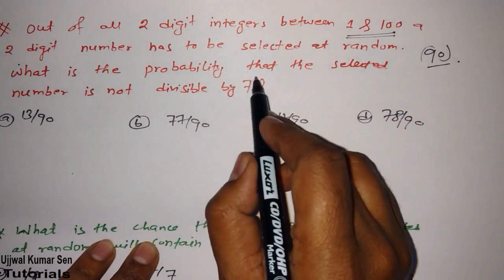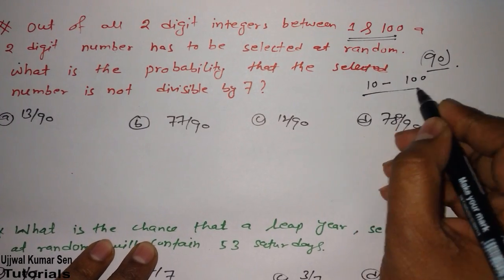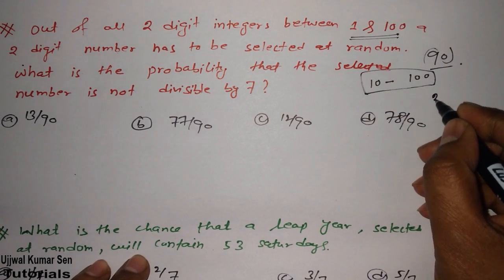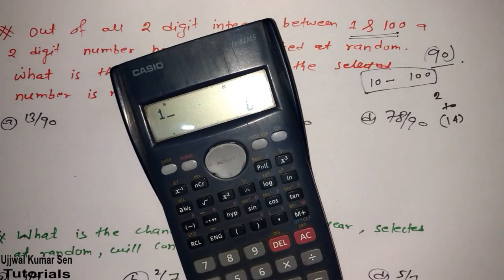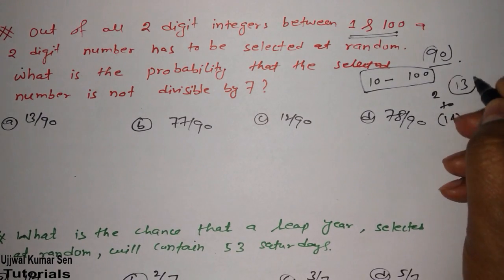Now what is the probability that the selected number is not divisible by 7? Is not divisible by 7. So I have to find out first, how many numbers are there in between 10 to 100 that are divisible by 7? Can you guess? Yeah, simple. Just 14, 21, 28, and so on. Because 14 multiple 7 is 98. So how many numbers are there? 13.